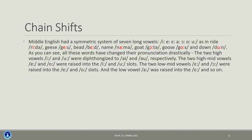Middle English had a systematic set of seven long vowels, as you can see here — long ē, a, ā, and others — all with long counterparts as in the example words shown. All these words have changed their pronunciation drastically in Modern English. The two high vowels long ē and long ō were diphthongized to /aɪ/ and /aʊ/ respectively.